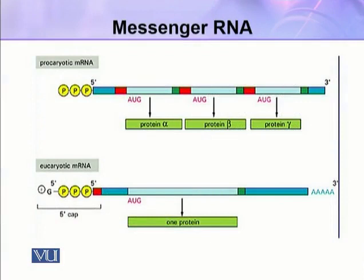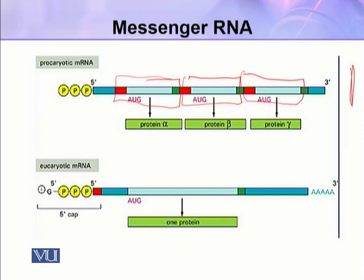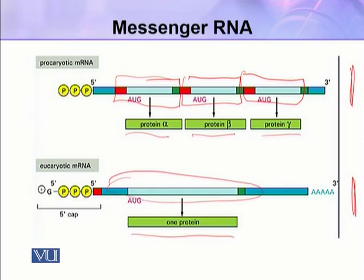Here you can see examples of monocistronic and polycistronic mRNAs. In the polycistronic case, there are three reading frames in a single mRNA, so three different proteins — protein alpha, protein beta, and protein gamma — are synthesized. In contrast, the monocistronic mRNA has only one reading frame, so only one protein is synthesized.